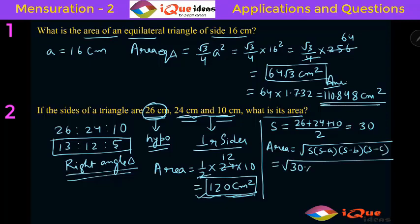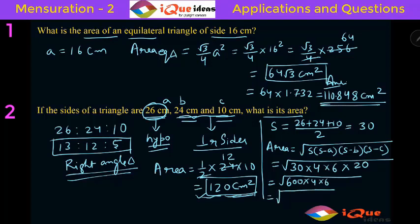Now S is 30. So it is 30 into S minus A, that is 30 minus 26, so it is 4. B is 24, so 30 minus 24 is 6. And 30 minus 10 is 20. So if you multiply, you will get 30 into 20 is 600, into 4 into 6. This can be rewritten as square root of 600, which is 100 into 6, and 6 can be written as 36, into 4. Square root of 100 is 10, square root of 36 is 6, and square root of 4 is 2. So the final answer will be 6 into 2 into 10 that is 120 centimeter square. So this was the other way of doing the same question.